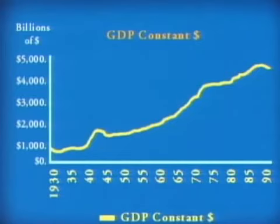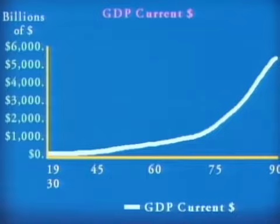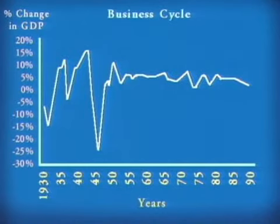We'll begin by reviewing what's happened to output, employment, and prices over time. This graph shows increases in gross domestic product, or GDP, since 1929. Gross domestic product is defined as the total amount of all goods and services produced by the domestic economy in one year. In 1929, GDP was 100 billion dollars; today it's 60 times greater. However, this is unadjusted for changes in prices — in 1929, a loaf of bread cost five cents; today the same loaf costs over a dollar. When we adjust for prices, we find that the growth is not so dramatic. The percent change in GDP over time is called the business cycle.